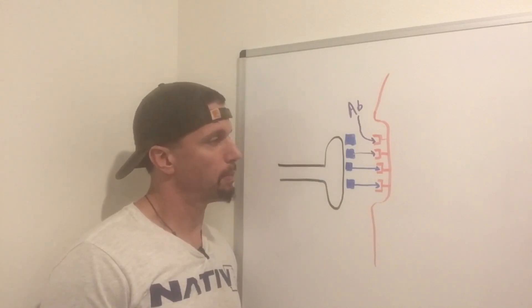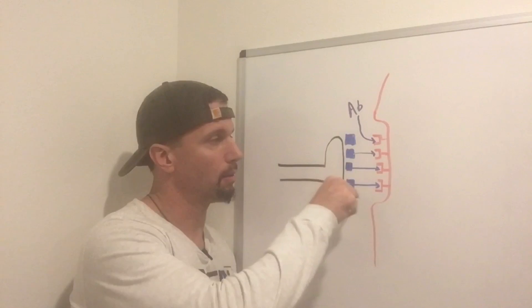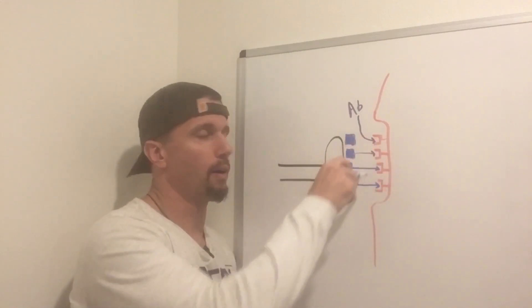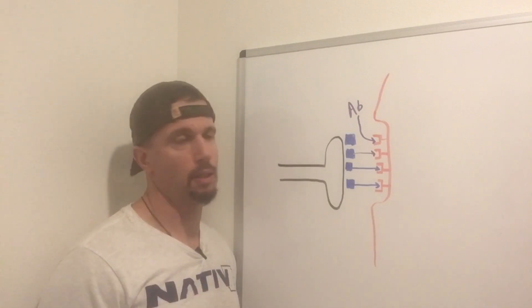If we can give them Donepezil or Aricept, it's an acetylcholine esterase inhibitor. It's going to allow the acetylcholine to stay out in the cleft longer, allow more interaction with the receptors, and decrease symptoms that way.